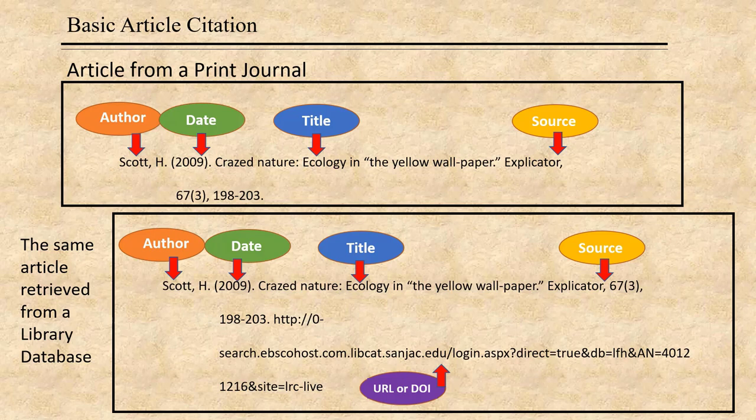Then the source information. In the case of an article from a print journal, that is the journal name, followed by a comma, then the journal edition number with the issue number in parentheses, followed by a comma, then the page numbers of the article in the journal, followed by a period.